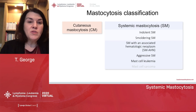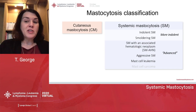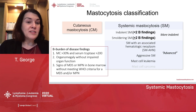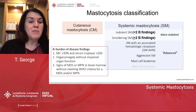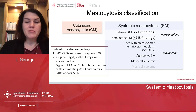There's cutaneous and systemic disease, with more indolent disease — indolent SM and smoldering — versus more advanced disease. You can further classify indolent disease using B findings (burden of disease). Fewer than two B findings indicates indolent; two or more indicates smoldering. B findings include bone marrow mast cell infiltration greater than 30%, serum tryptase greater than 200, organomegaly without impaired organ function, and signs of dysplasia or myeloproliferation in the bone marrow without meeting full MDS or MPN criteria.